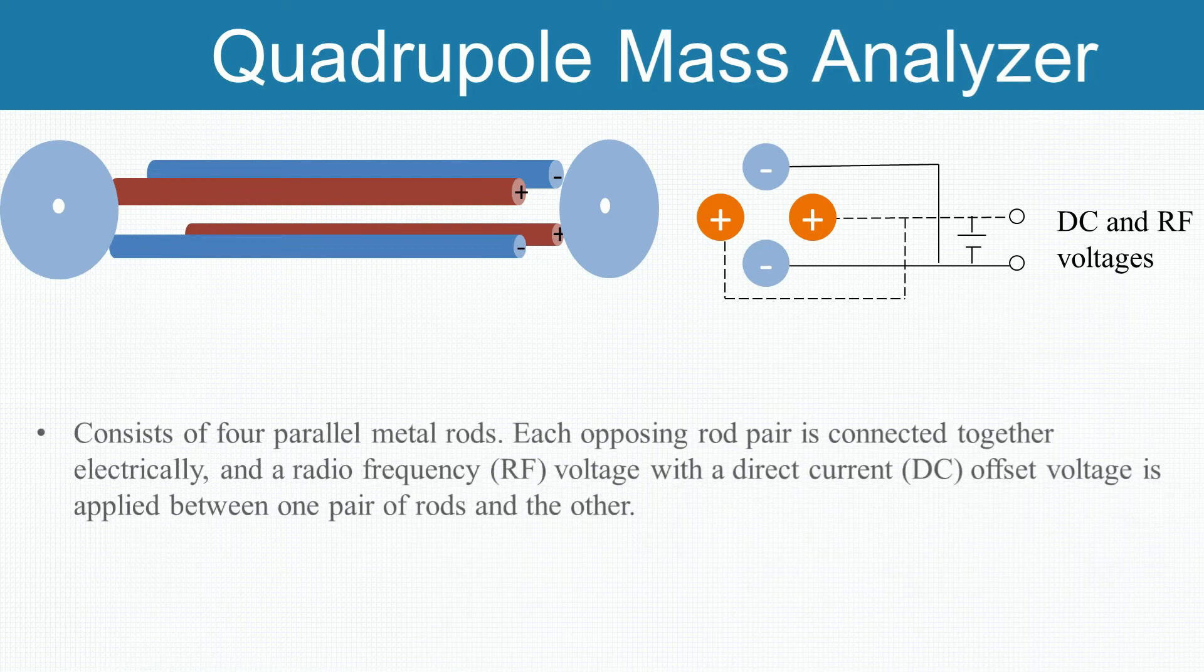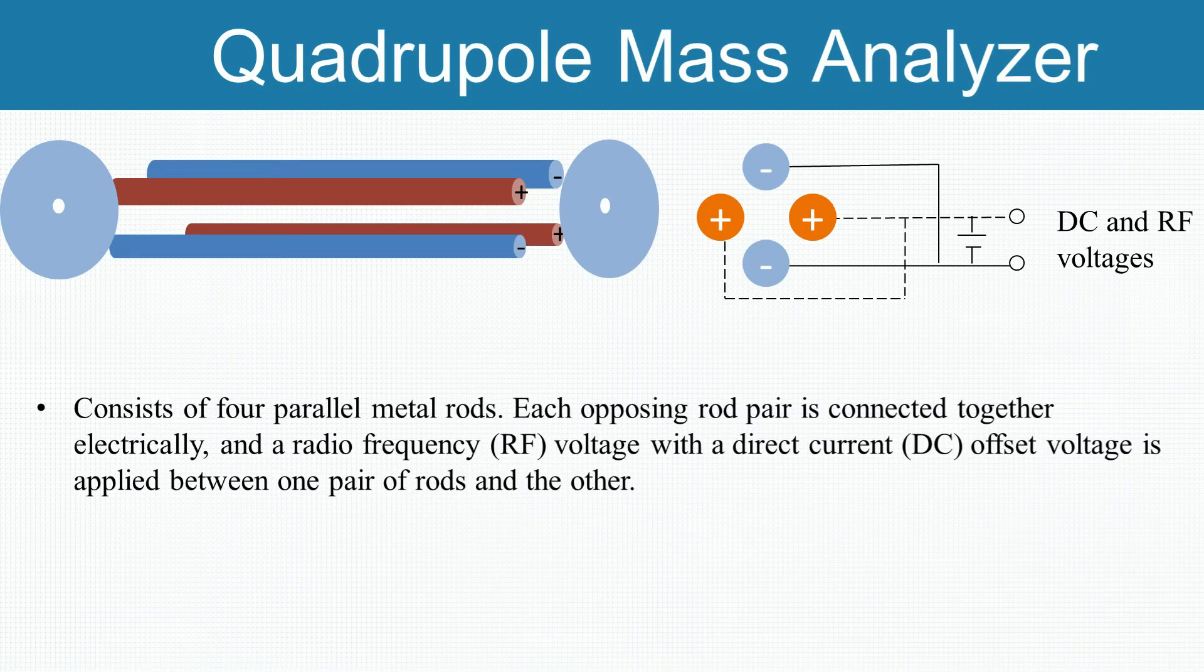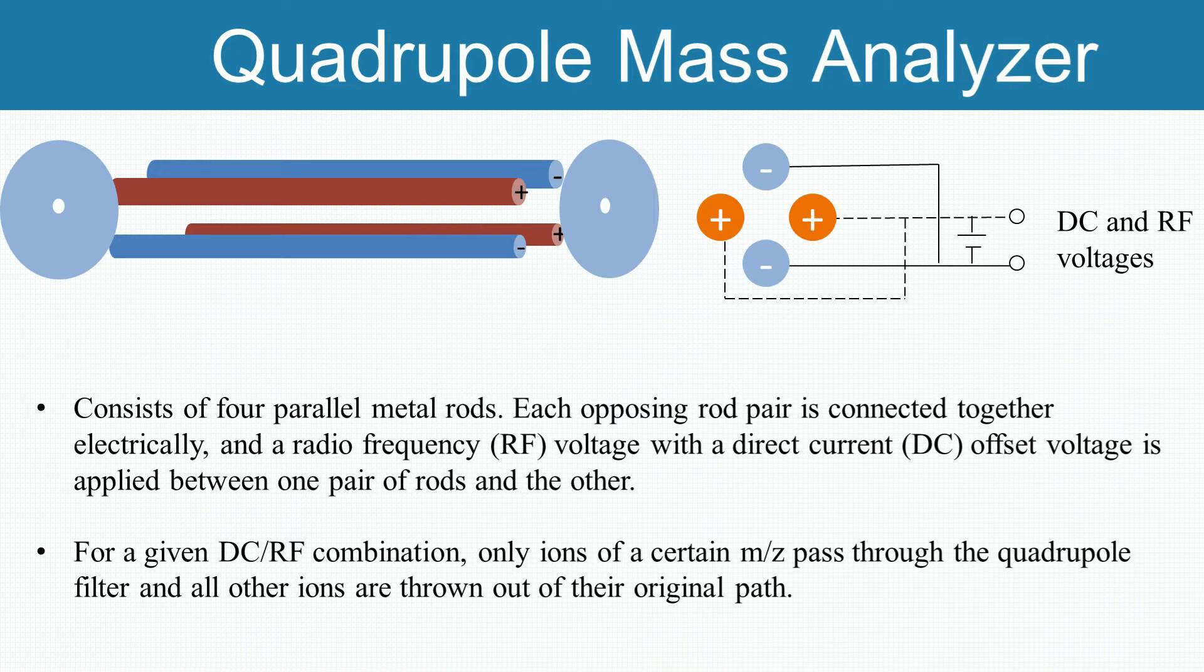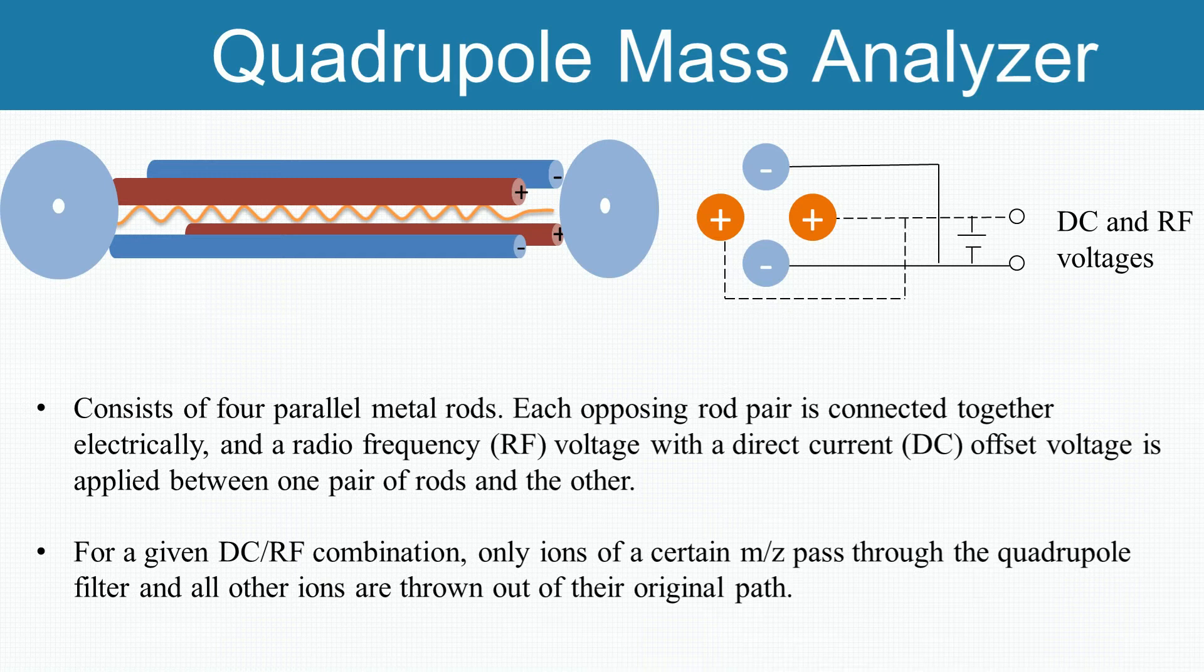Quadrupole consists of four parallel metal rods, and each opposing rod pair is connected together electrically. One pair of rods is applied with a radio frequency voltage, while another one is applied with a direct current voltage. At a given frequency voltage and direct current voltage combination, only the ions of a particular mass-to-charge show a stable trajectory and can be transmitted to the detector, while other ions with unstable trajectories don't pass the rod, because the amplitude of their oscillation becomes infinite. By changing frequency and direct current voltage in time, usually at a fixed ratio, ions with different mass-to-charge values can be transmitted to the detector one after another.